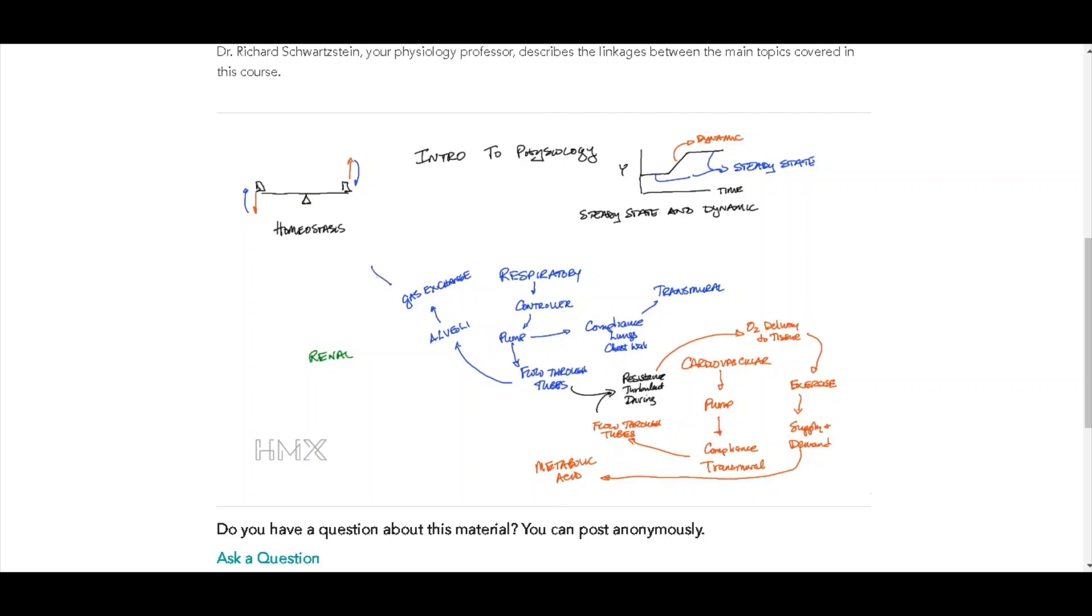And this brings us to considerations of oxygen and carbon dioxide. And to understand both of those, we have a common principle that will come out, which is partial pressure, which tells us about the amount of oxygen and carbon dioxide in the blood.